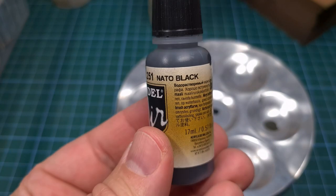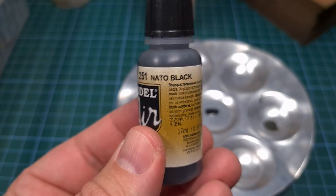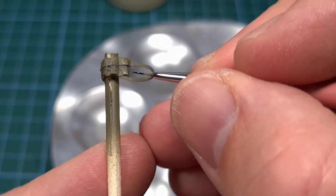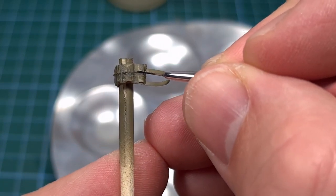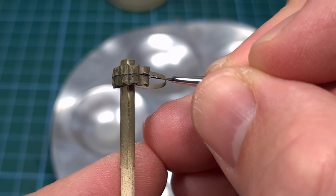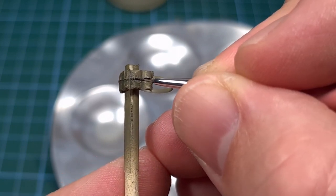Next to accent the openings of each of those individual pouches I'm going to use NATO Black and using a fine detail brush I'm going to highlight the openings of each of those pouches. Now you can see the effect.